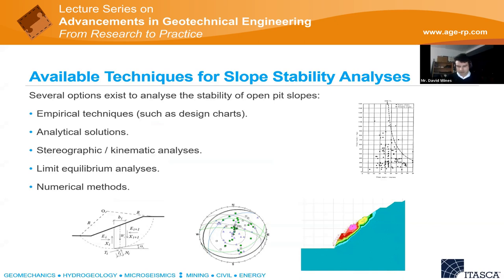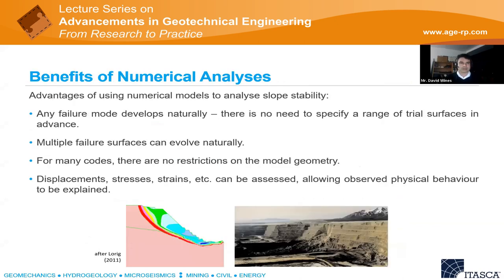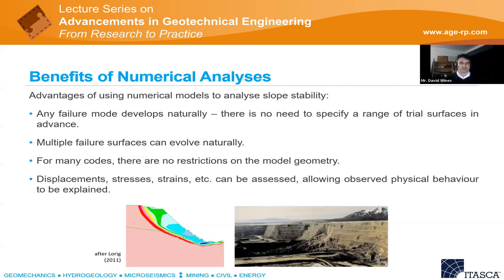The main advantages of using numerical models to analyze slope stability are that any failure mode can develop naturally — you don't need to specify any trial surface. Multiple failures can evolve naturally in a model, and for many codes there's no restriction on the model geometry. You can also interrogate displacements, stresses, and strains, which allows you to compare model behavior to field measurements.